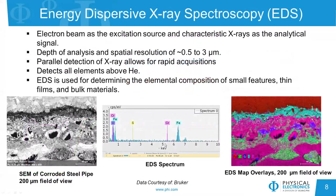For EDS, this is again using the electron beam as the primary source — the same electron beam that we use for Auger — and we're analyzing characteristic X-rays as the analytical signal. The depth of analysis is much, much deeper than it is for Auger. Now we're looking at tenths of microns to microns in depth, depending on the beam energy that you use. One beauty of EDS is that it's a parallel detection type of system, so the acquisitions are quite rapid — quicker than for Auger acquisitions typically. EDS detects all elements above helium, and in general it's used for determining the elemental composition of small features, thin films, as well as bulk materials.